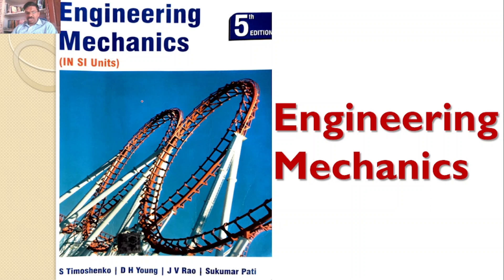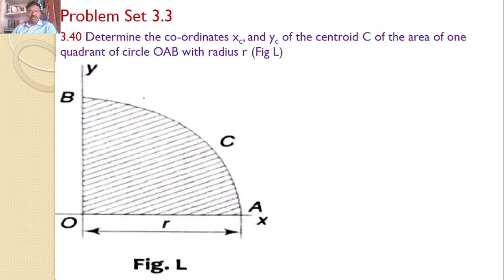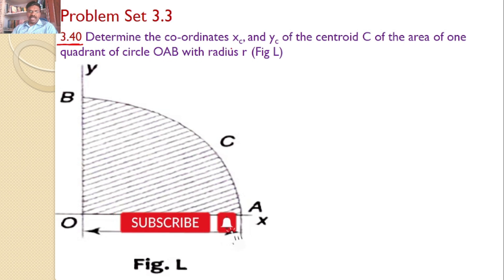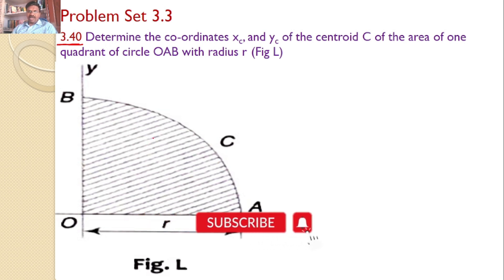Welcome to RK Tutorials. Solutions to Engineering Mechanics by Timoshenko, 5th edition. In this tutorial, we will discuss problem 3.3 and problem number 3.40: determine the coordinates XC and YC of the centroid C of the area of one quadrant of circle OAB with radius R. Our interest is to find the centroid for one quadrant of a circle.